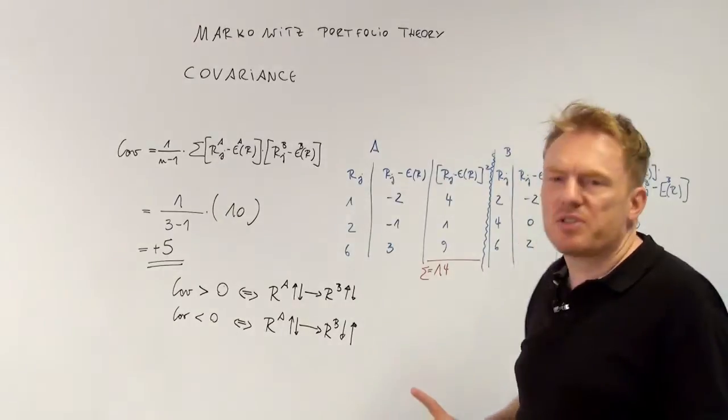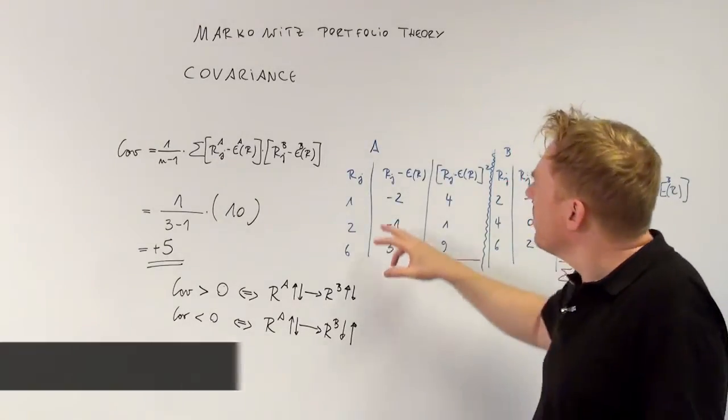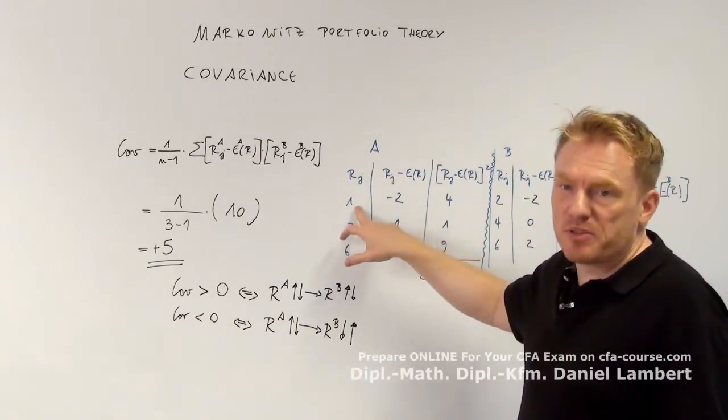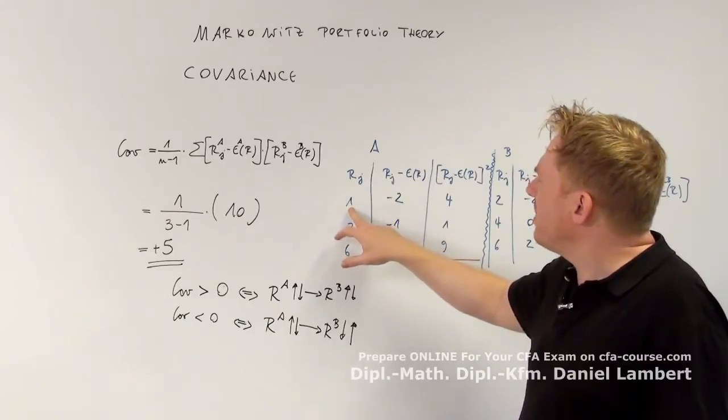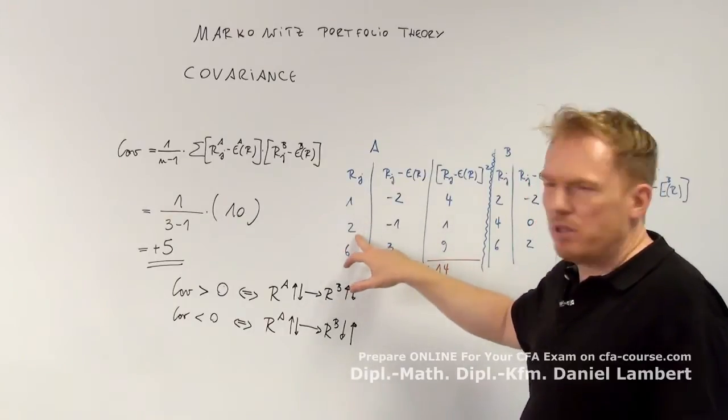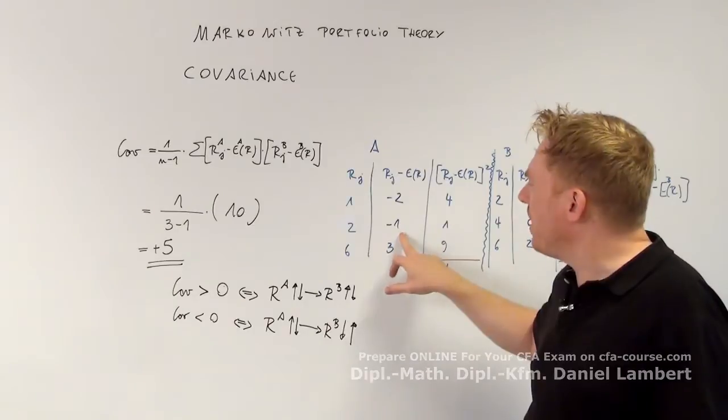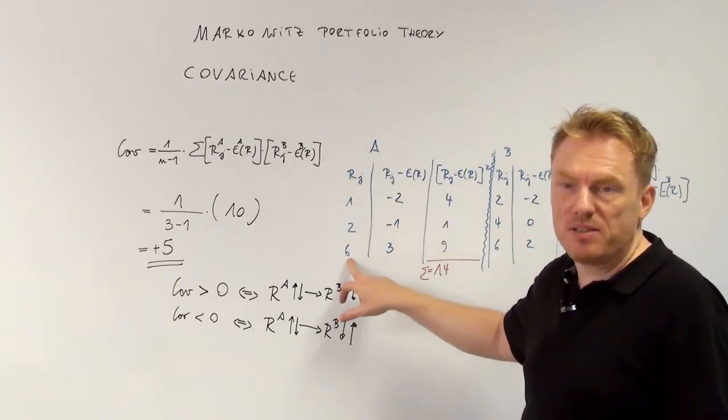9 divided by 3 is 3. So 3% is the expected value. As we subtract 3%, we get 1 minus 3 equal to minus 2, 2 minus 3 equal to minus 1, and 6 minus 3 is equal to 3.